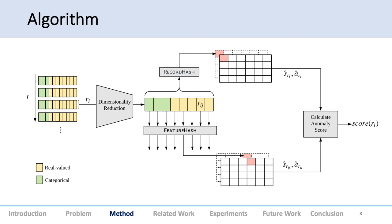We have record hash and feature hash—two different parts. For feature hash, we take each individual feature into account. For record hash, we consider the entire record. After dimensionality reduction, we take each dimension individually and all dimensions together. We hash them in a matrix form, calculate anomaly scores.